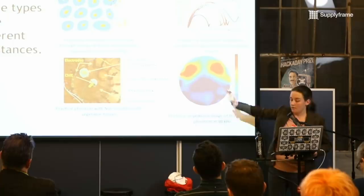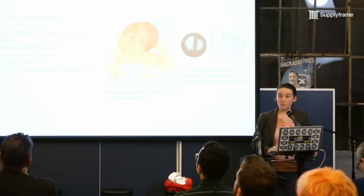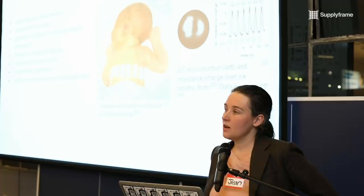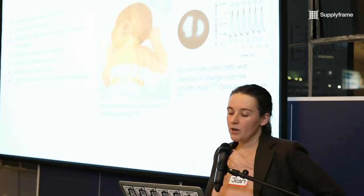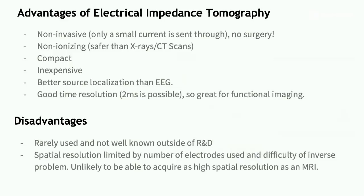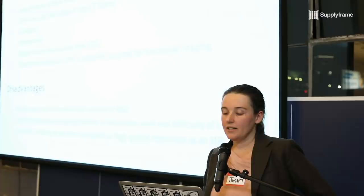Electrical impedance tomography has been used for lung volume measurements, muscle and fat mass measurements, gestural recognition, bladder and stomach changes, breast and kidney cancer detection, hemorrhage detection, and there are also interesting papers looking at depth of anesthesia and action potentials — the neuroscience angle. It's non-invasive, non-ionizing, compact, and inexpensive. It has much better source localization than EEG, and good time resolution — 2 milliseconds is possible — so it's good for functional imaging.